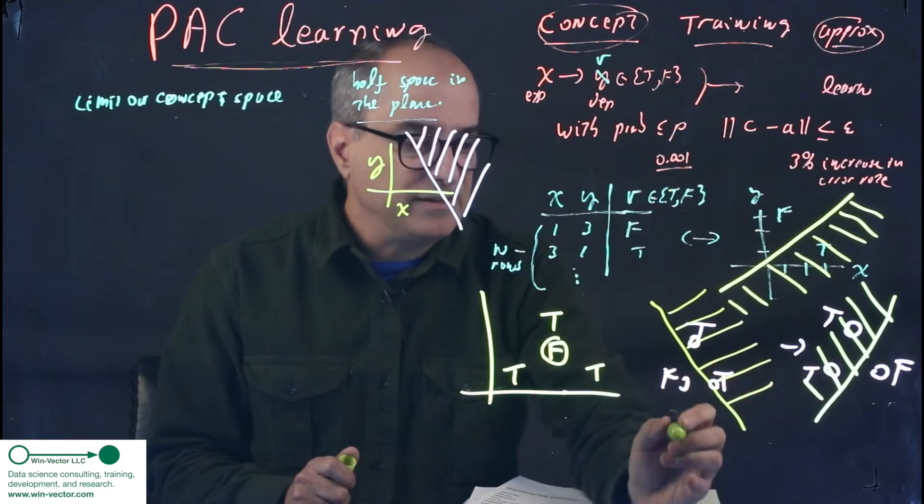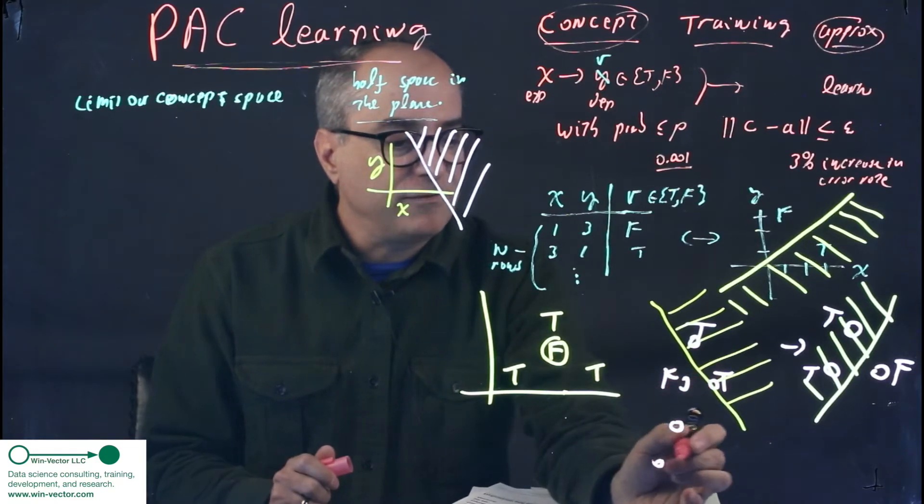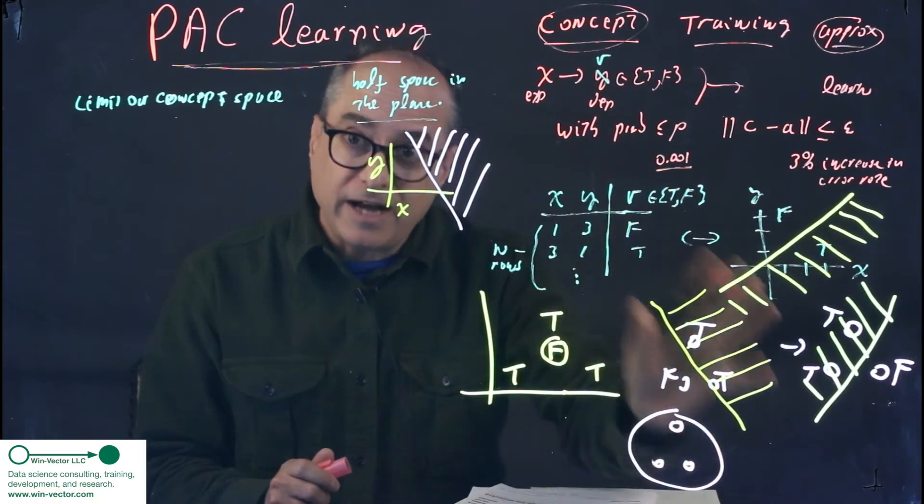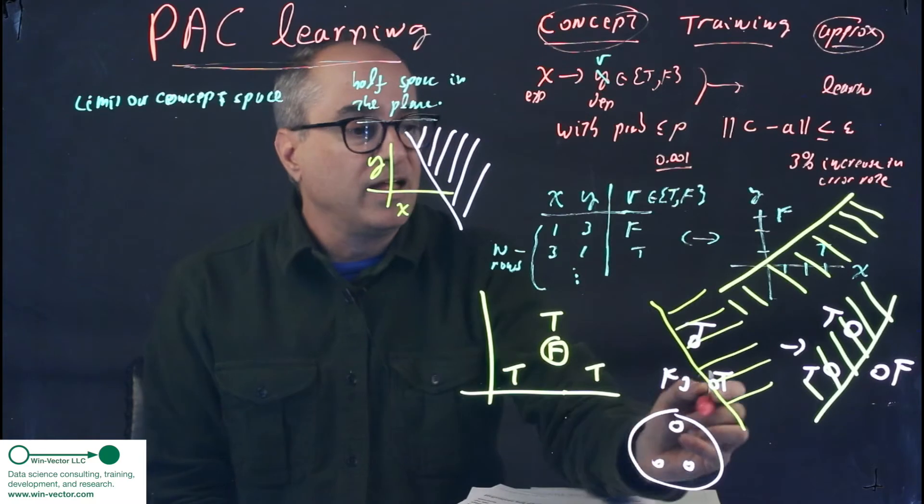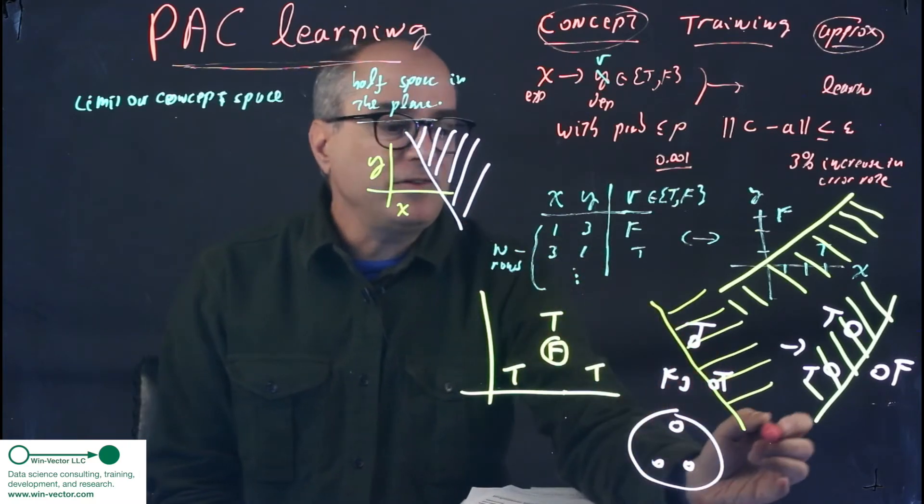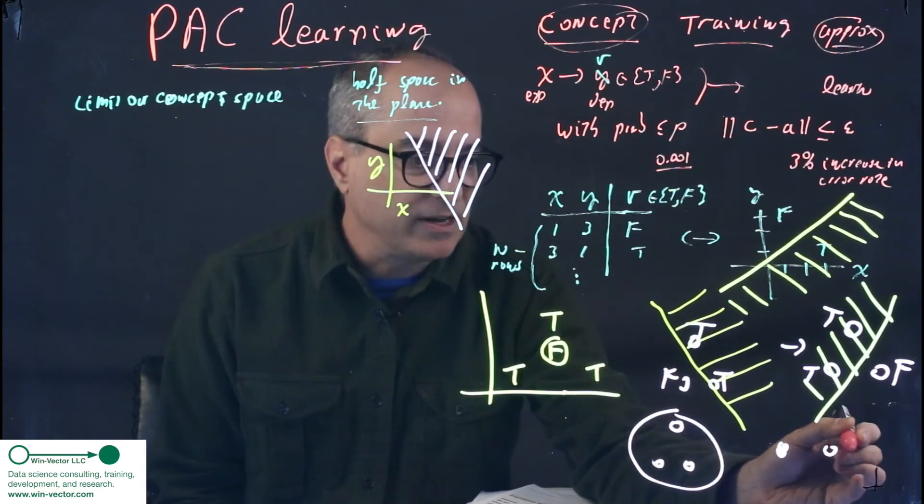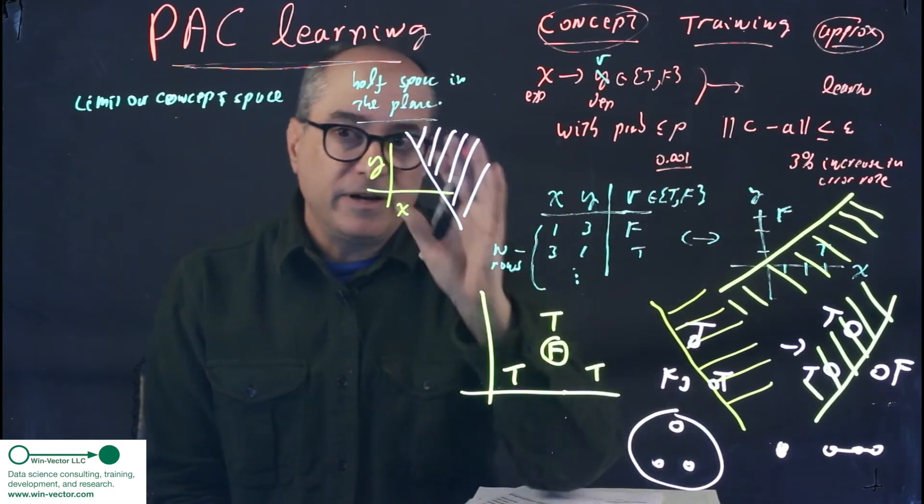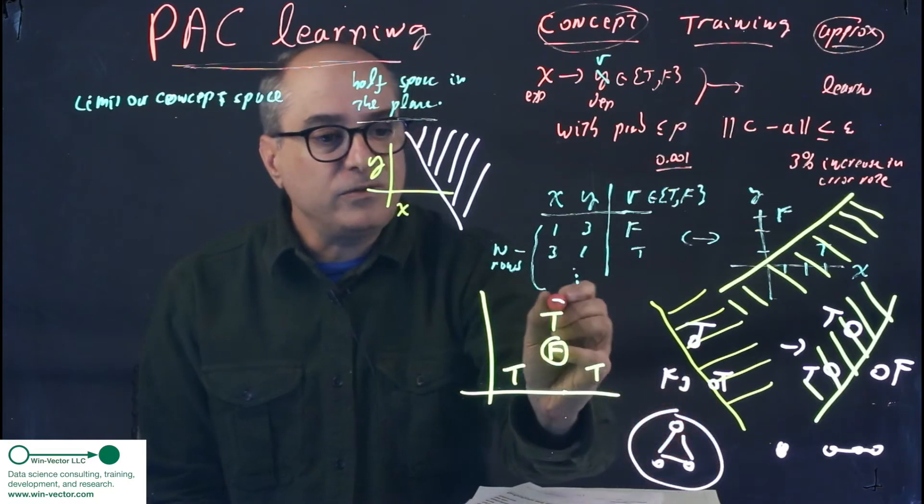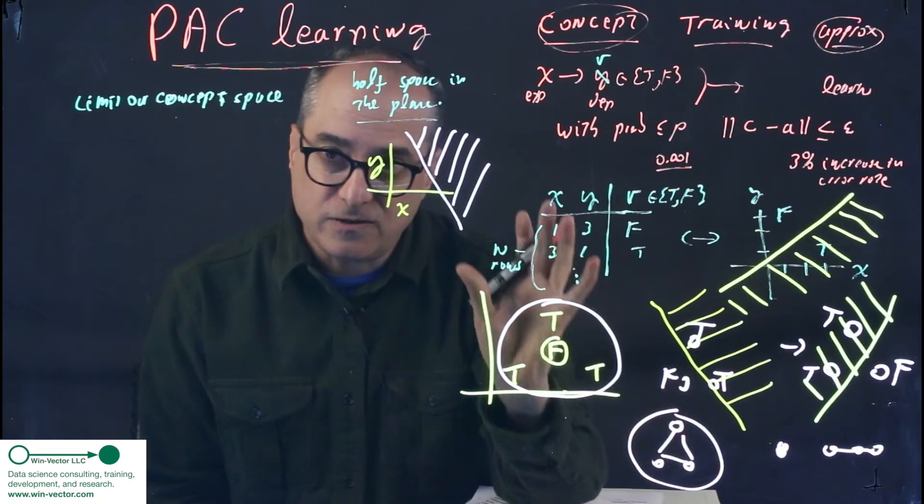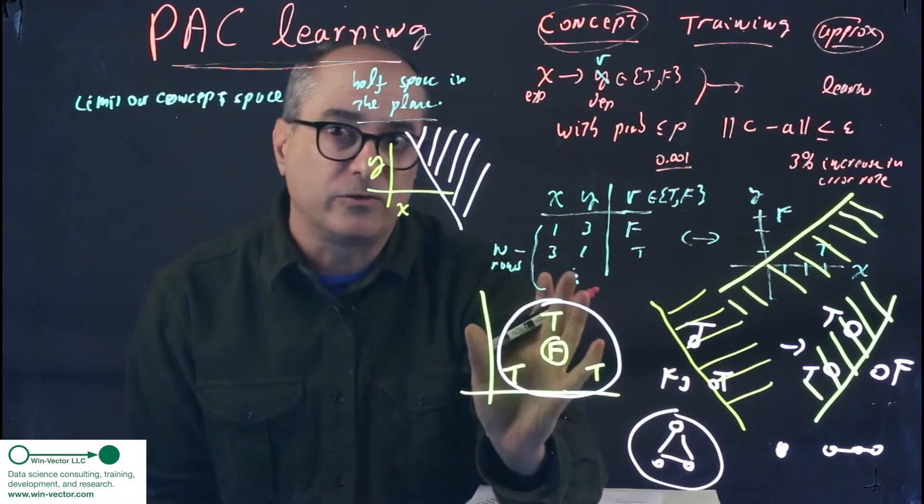And we call this set shatterable with respect to our concept space, if for any subset, there's a concept that finds that subset. It's not always the same concept. We have to move which plane we're picking, but it's always from our concept space. And it turns out, obviously there are some sets of three points that are not shatterable. For instance, we could just stack them all on top of each other or put them in a line. Both of those are not shatterable. But there is a set of size three that's shatterable. But there is no set of size four that's shatterable. It's not just that this one's not shatterable by a line half-space. No set of four points are. Something always goes wrong. That requires a proof.